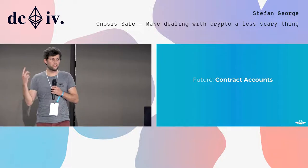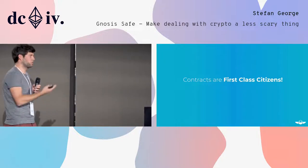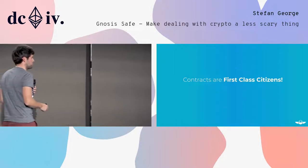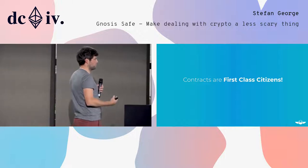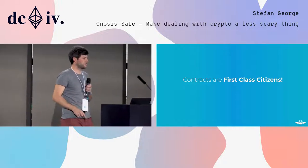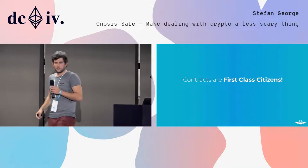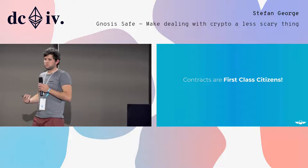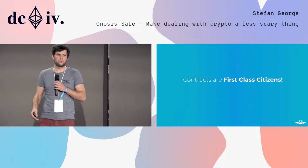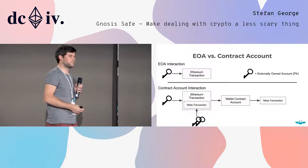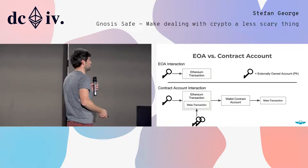The great thing about contracts is you can implement all kinds of logic into them. Contracts are so-called first-class citizens in Ethereum, meaning they can perform the same operations on the Ethereum network as an externally owned account — a private key-controlled account.